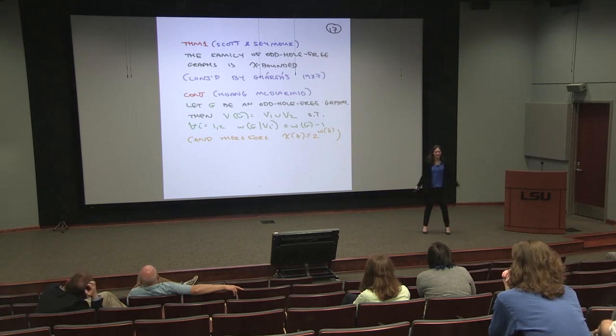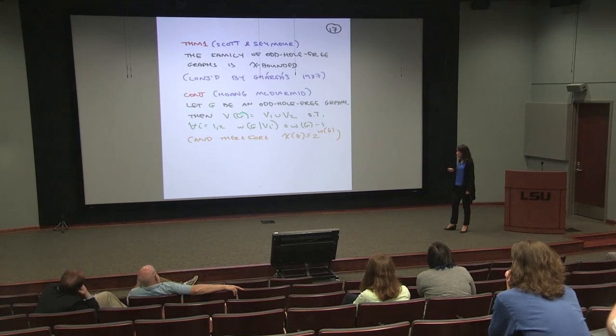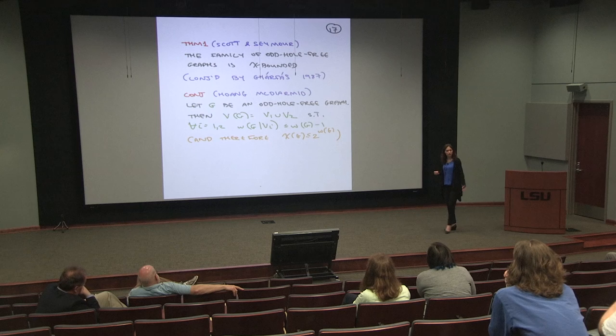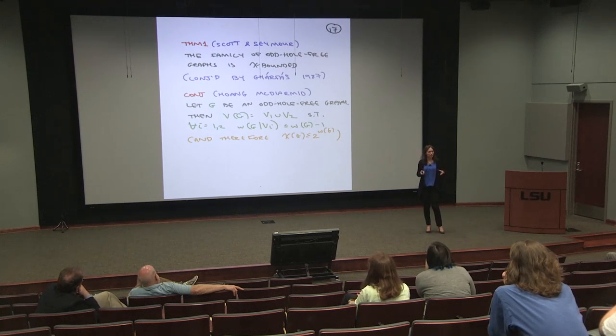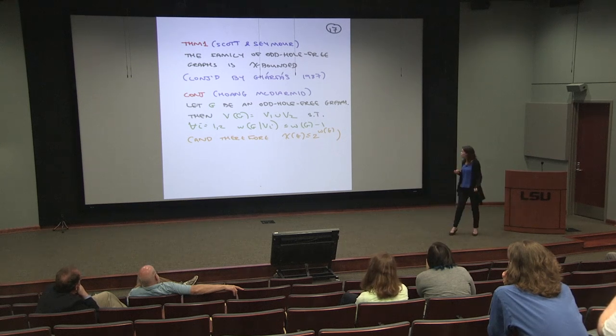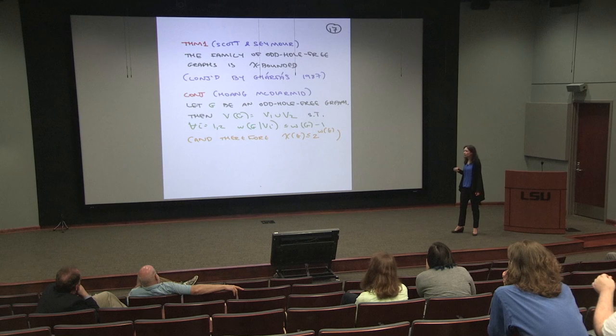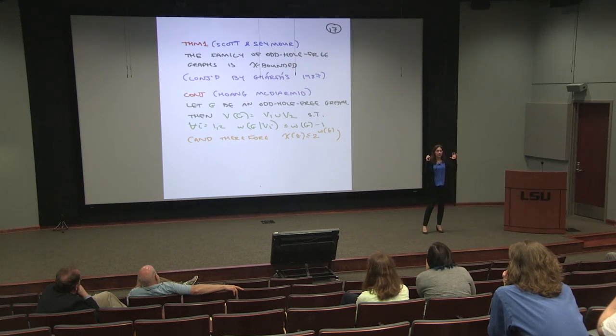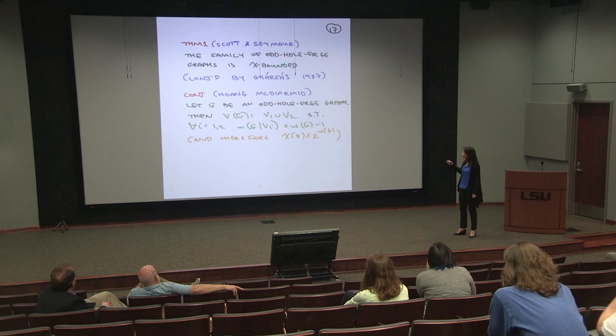There's a related conjecture of Longing and Dermate, still open, proposing a structural approach: in every odd-hole-free graph you can partition the vertices into two parts so that neither part contains a clique of size omega. If you could prove that, the clique number goes down by at least one in each part, and that would give you that odd-hole-free graphs are chi-bounded with chi-bounding function 2^omega — better than the current tower bound. If you could solve that partition conjecture, you could improve the bound.